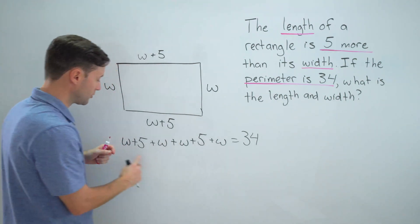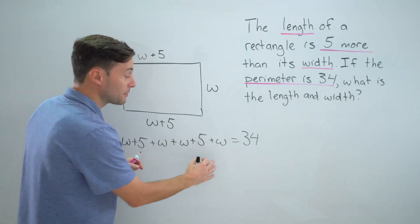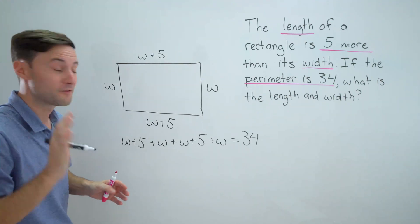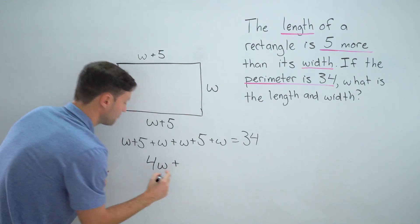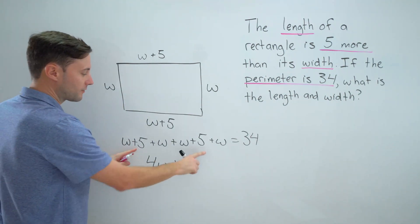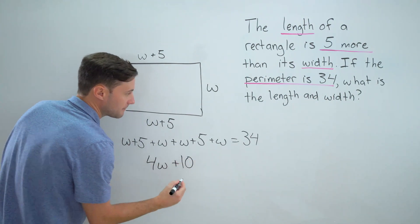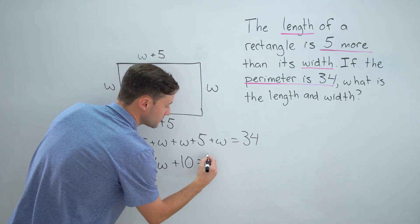I've got a lot of like terms: w plus w plus w plus w—we can simplify that to 4w. We've got four of them, so that simplifies to 4w plus we've got plus five plus five, that simplifies to plus 10, and all of that equals 34.